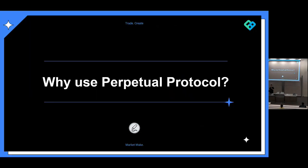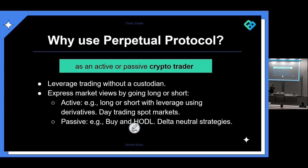Why might you want to use Perpetual Protocol? The main use case is for active and passive crypto traders — you can acquire leverage without going to a custodian or trusting a third party. Active traders express their market views by going long or short — they may long or short with leverage using derivatives, or day trade or swing trade spot markets. Passive traders are more relaxed; they just want to earn a return, maybe buy and hold, or do a delta neutral strategy where they don't want exposure to the price of any cryptocurrencies.